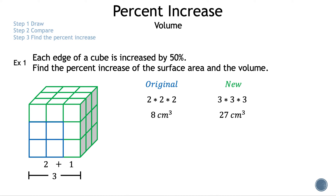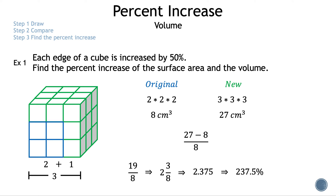To find the percent increase from the original to the new volume, we compute (new − original) / original = (27 − 8) / 8 = 19/8. Converting to a mixed number gives 2 and 3/8, and converting to a decimal gives 2.375, which as a percentage is 237.5%. The volume of our new cube is 237.5% more than the original.